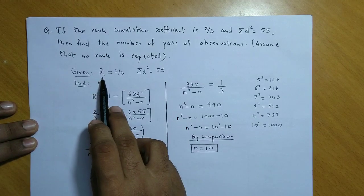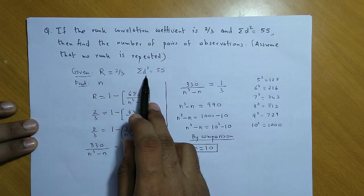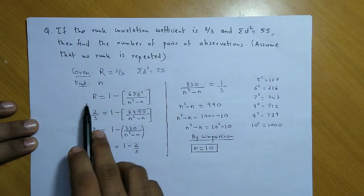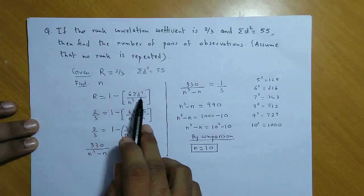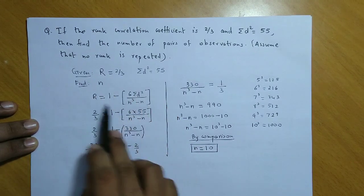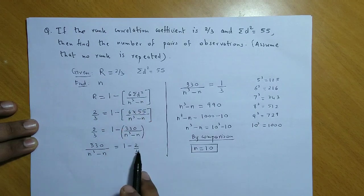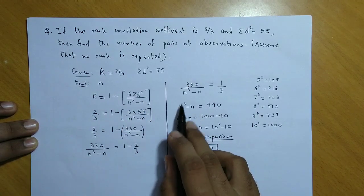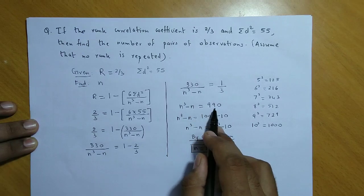So, R is given 2/3, summation d square 55. Formula likkar R aur summation d square ki value substitute kijiye. Simplify kijiye. Aapko value n cube minus n ki 990 milegi.